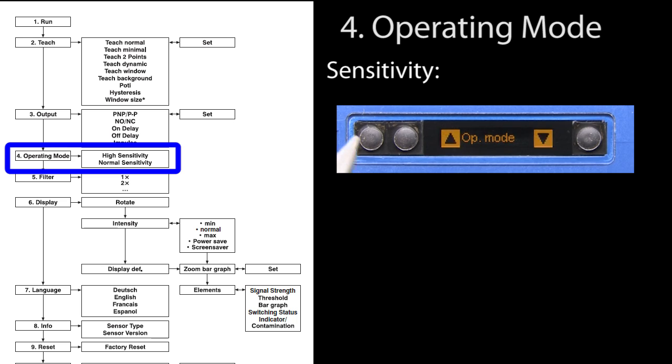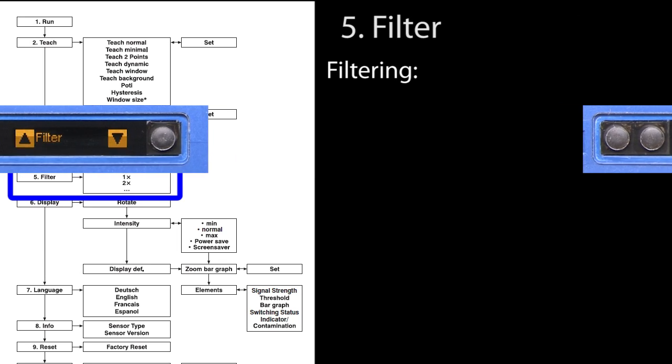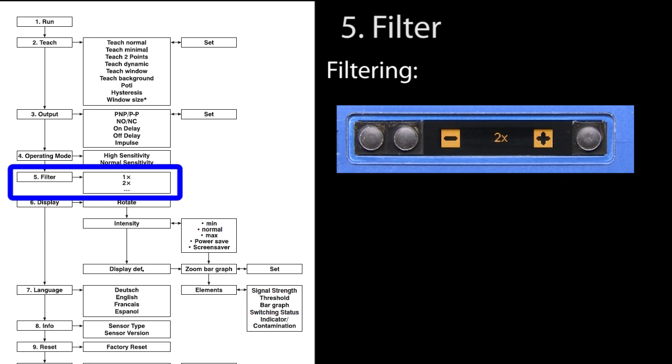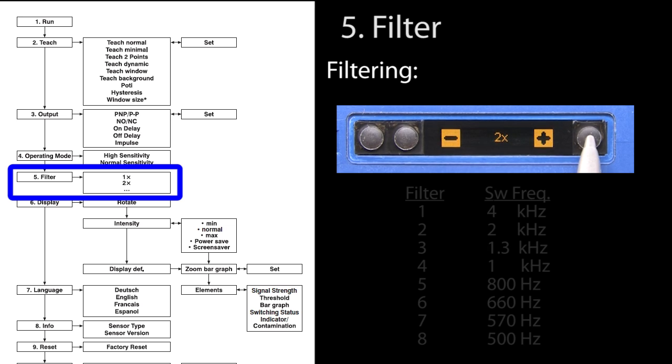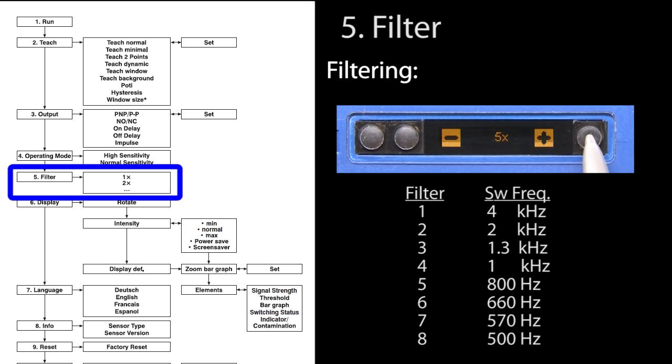Operating mode is where we set the sensor sensitivity that we mentioned earlier. The high sensitivity setting is for extending the detection range so you can detect objects a little further away. You can filter the signal to reduce false alarms. There are eight filter settings but beware, each one reduces the switching frequency of the sensor. The sensor switching frequency is how fast it can make a decision.